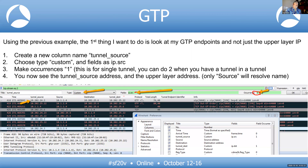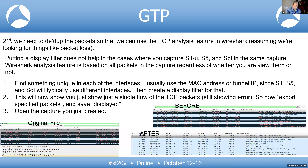To deduplicate packets, find the most unique characteristic of one of the three copies. Since GTP is stripped at the P-Gateway egress, filtering on "not gtp" removes all packets without a GTP tunnel, leaving only the egress copy. If you want to look specifically at the eNB-to-S-Gateway leg, filter on the VLAN or the eNB's source IP address — something unique to that copy.